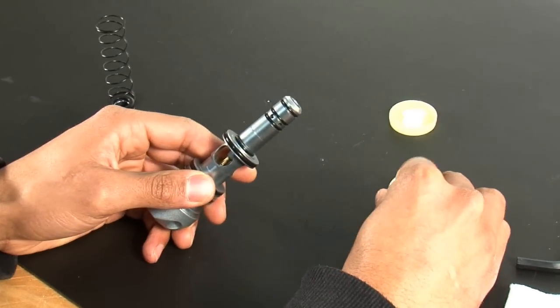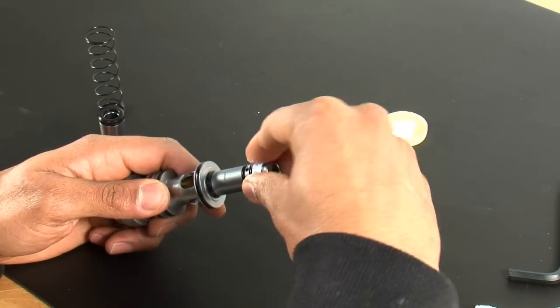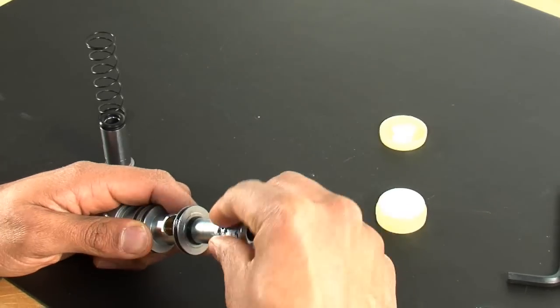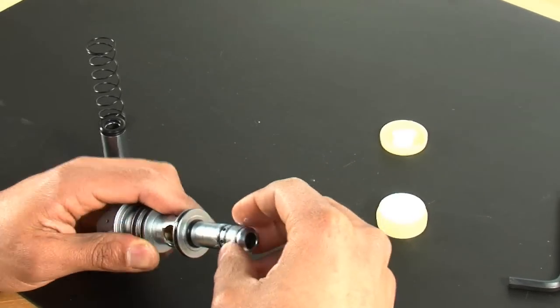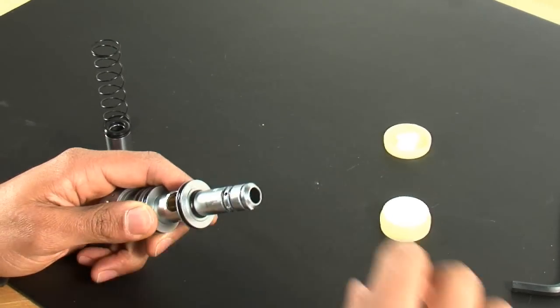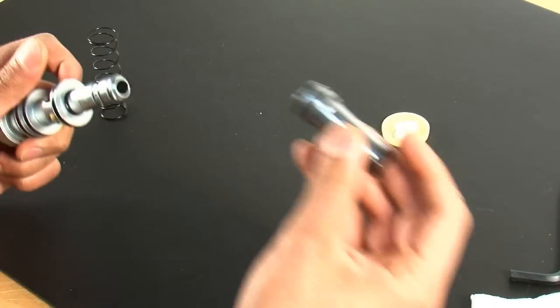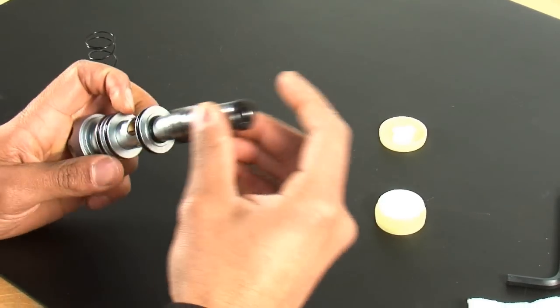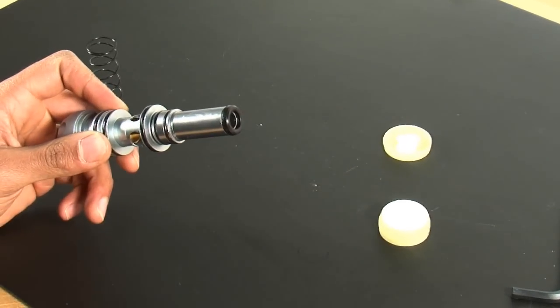Next you're going to take your lube and apply it to the bolt guide o-rings. Give it a nice liberal dose of lube here. You can slide your bolt back on now. Work it around and make sure the lube gets spread onto the bolt guide o-rings.